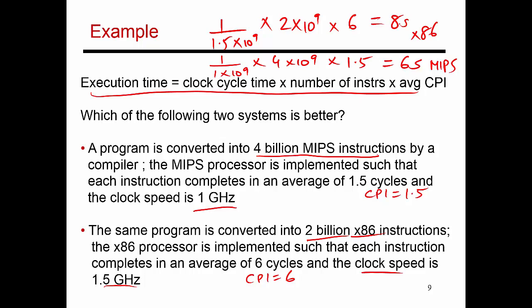So the program actually takes longer to run on the x86 architecture, even though it has a faster clock speed. For the longest time, I'm guessing you have assumed that a higher clock speed implies higher performance. But that's not always the case. Performance is also determined by the number of instructions and how many cycles it takes to do each instruction. So once you factor all of these in, in this example, it turns out that the MIPS architecture runs this particular program faster.